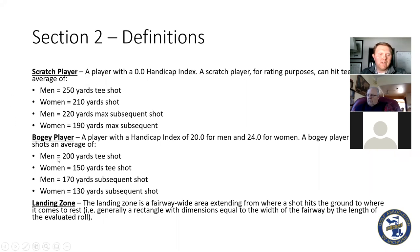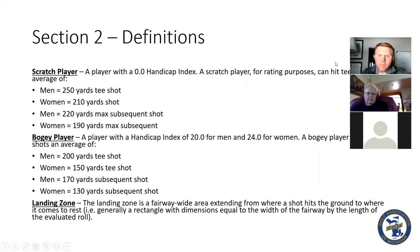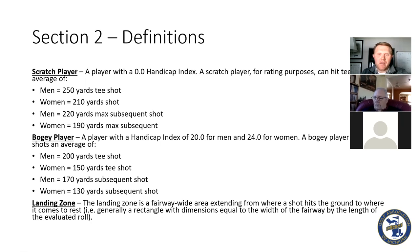The bogey player hits 200 yards for a tee shot, 150 yards for a female, 170 yards subsequent shot for men, and 130 for women. The landing zone is the area extending from where the ball hits the ground to where it ends up — a 20-yard window. When looking at fairway or obstacles within landing zones, you want to evaluate that entire 20 yards. If the sheet says 150, we don't just look at exactly 150; we're looking at 150 plus the 20 yards behind it, where the ball first comes into the ground and rolls out.